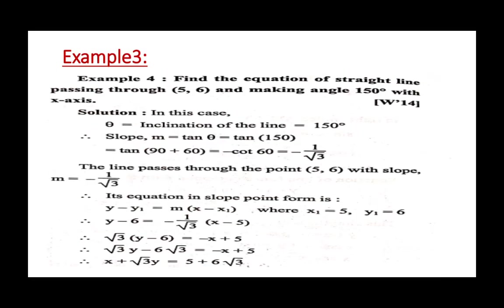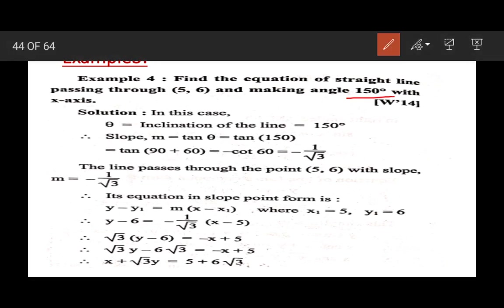The next example is: find the equation of a straight line passing through the point (5, 6) and making an angle of 150° with the x-axis. Since inclination theta is given as 150°, we can find the slope using m equals tan(theta), so m equals tan(150°).